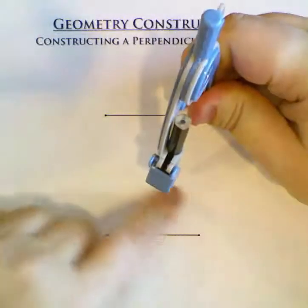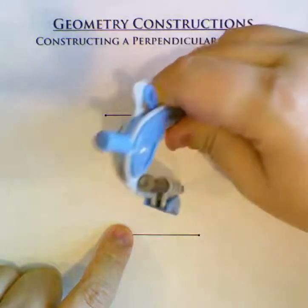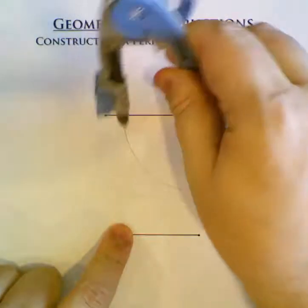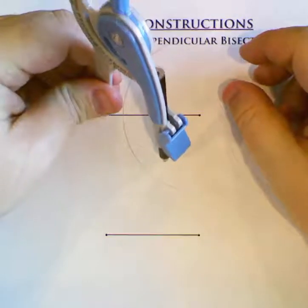From there, we're going to draw two very large arcs, one from each side of the line segment. So from here, I'm going to draw one large arc this way, and from this side, I'm going to draw one large arc this way.